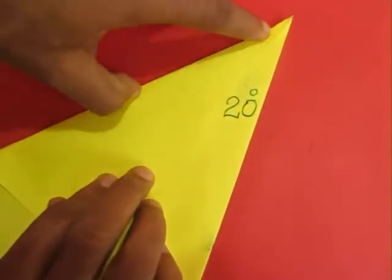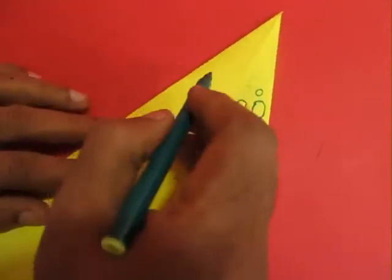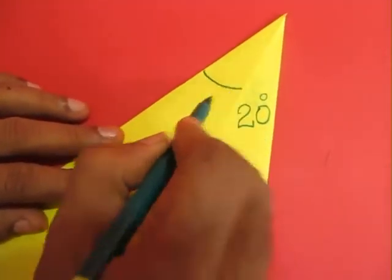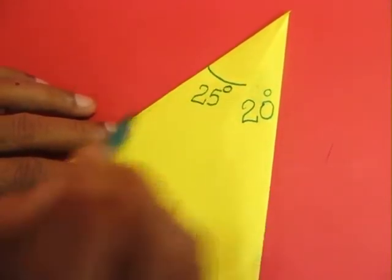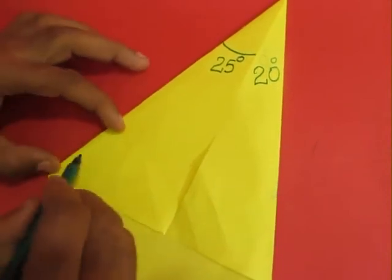You bisect this remaining angle and the top left hand angle would be 25 degrees. And this being a right angle triangle, if one angle is 90 the other 25, the third angle has to be 65.